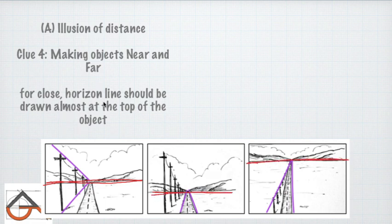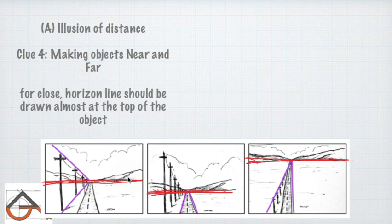For a close view, the horizon line should be drawn almost at the top of the composition. If you want to show a path going toward the horizon, the horizon should be near the bottom. For a balanced composition, the horizon should be at the center of the image. This technique can be used to control the viewer's perspective.